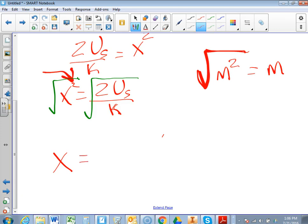And that will equal, now, the square root on the other side just stays, square root of 2u sub s over k.